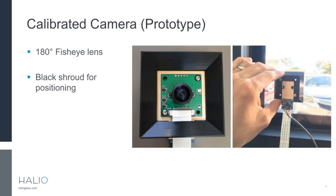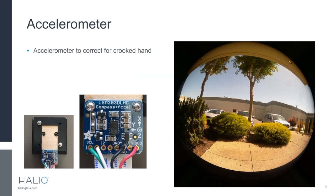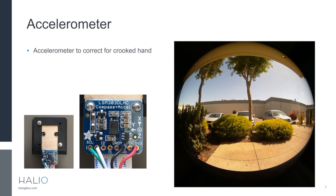To do this, we developed a prototype camera based on the Raspberry Pi system. It has a 180-degree fisheye lens so you can get a full view left to right and from sky to ground. It has a black shroud around it that allows you to hold the camera against the window, aligned in the plane of the window with the lens very close to the glass. The black color reduces reflection for a clearer image. Since it's nearly impossible to hold the camera exactly level, we added an accelerometer to measure the angle and correct it by rotating the image properly.